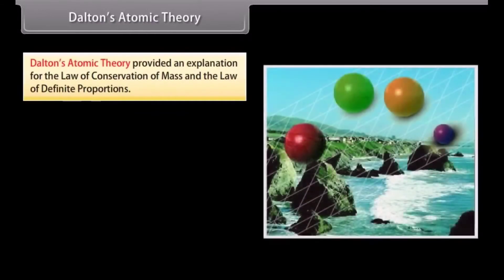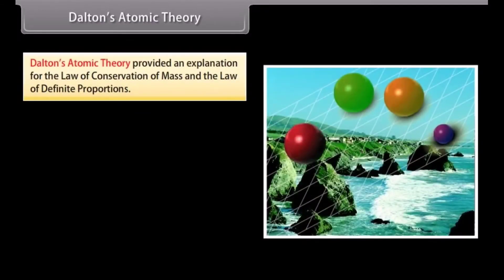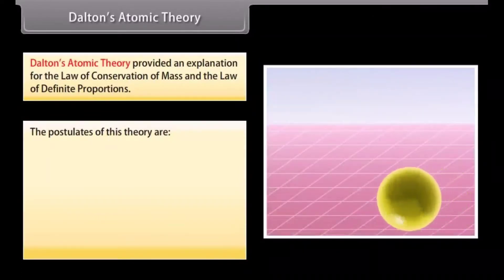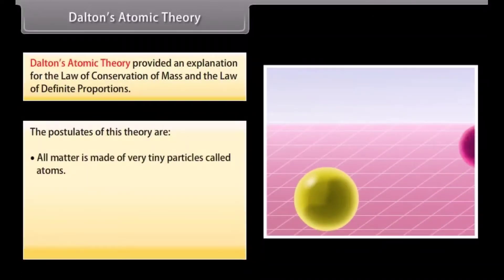Dalton's Atomic Theory. Dalton's Atomic Theory provided an explanation for the Law of Conservation of Mass and the Law of Definite Proportions. The postulates of this theory are: 1. All matter is made of very tiny particles called atoms.